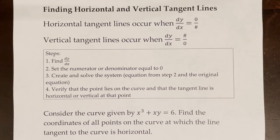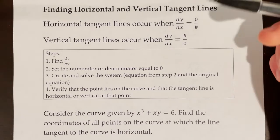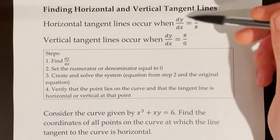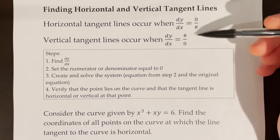The third topic related to implicit differentiation that we're going to cover is finding horizontal and vertical tangent lines. Horizontal tangent lines occur when dy/dx, or the derivative, is equal to 0 over a number.